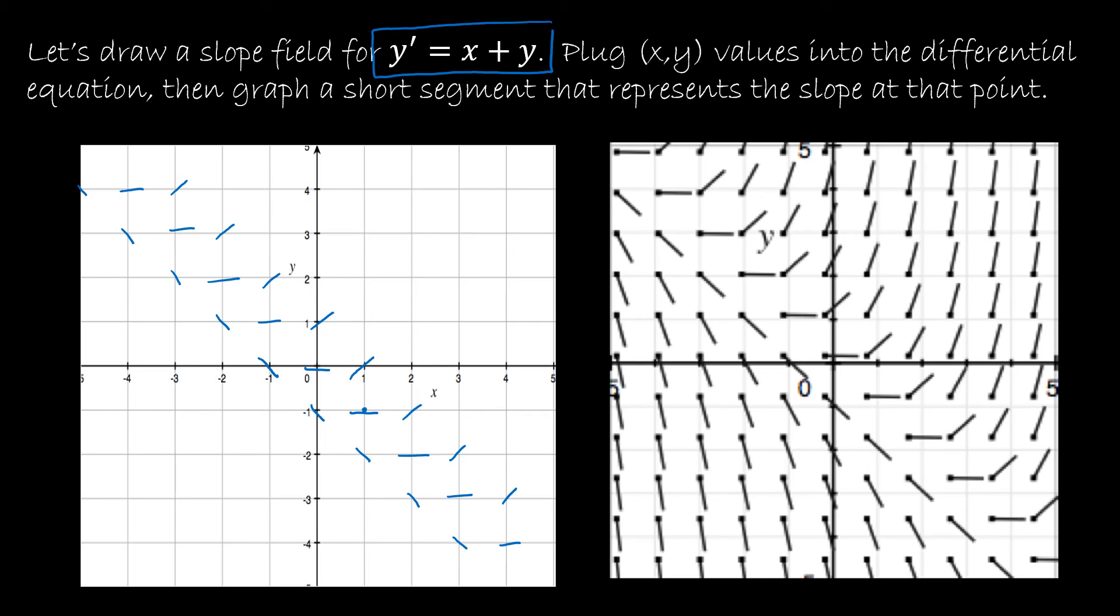What is the point of a slope field? Once we know what our initial condition is, we can get a very good idea about what our curve is going to look like. We can see that we would have many different curves that we could draw, and just knowing what that initial condition is would help us know what that curve is going to look like.